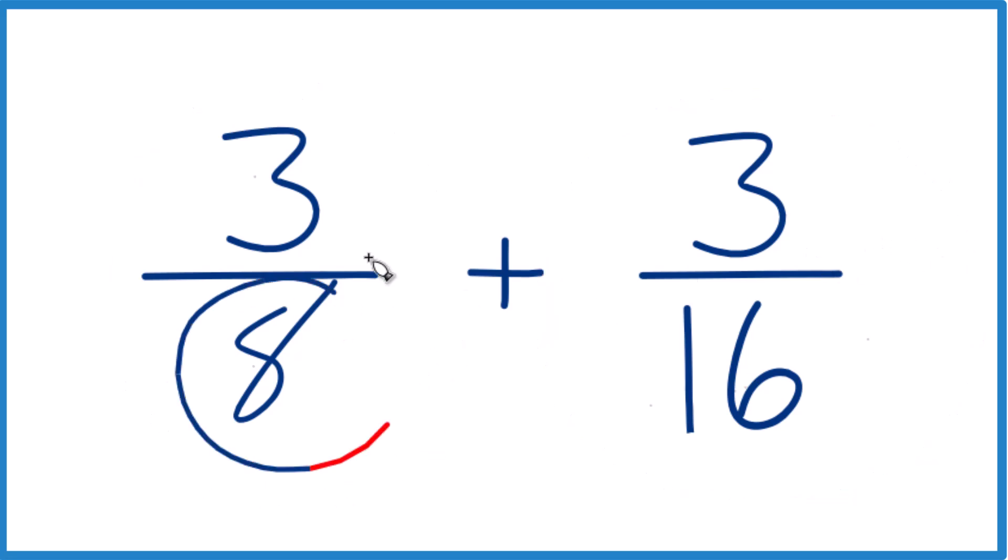So what we need to do is get a common denominator, that's the number down here. We want this to be the same, because if this is the same, we just add the numerators together and we're done.